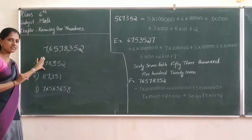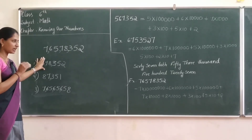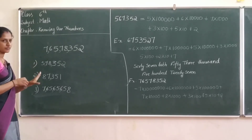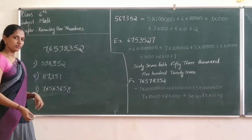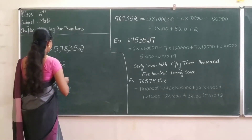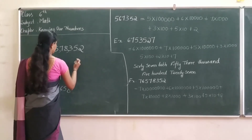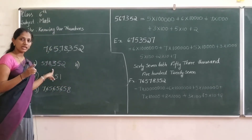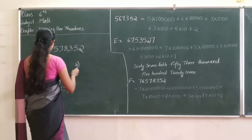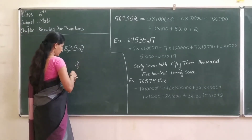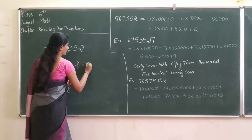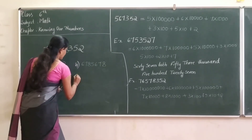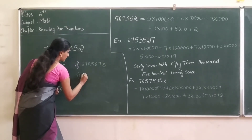After putting a comma, it is easy to write and easy to spell the number name. Understood? So, I will give one more example. This is very important, okay?